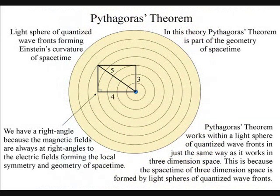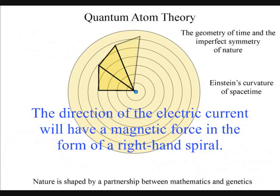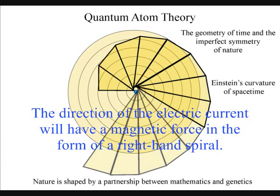The magnetic fields are always at right angles to the electric fields, forming a local space-time symmetry and geometry. This will spiral out, creating visual and mathematical patterns of our universe.